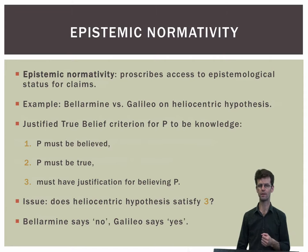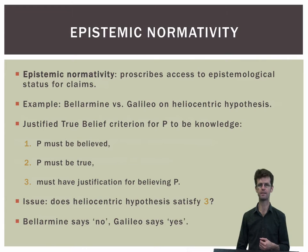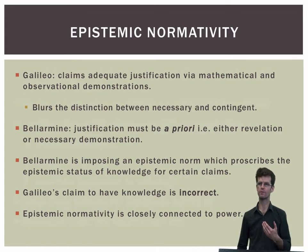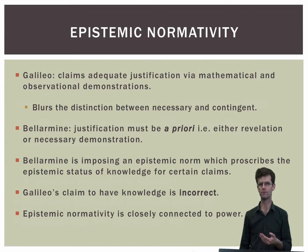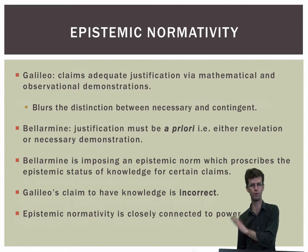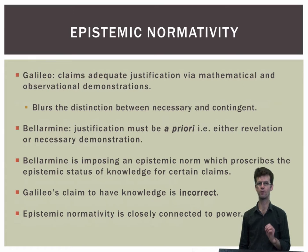With regard to the first requirement, the theory was believed at least by its supporters. With regard to the second, matters were still to be settled, but they would have been a lot closer to being settled if it could be shown that the third requirement was satisfied — that there was adequate justification for believing the heliocentric system to be true. The debate between Bellarmine and Galileo was therefore over the third requirement. According to Galileo, there was adequate justification for believing that Copernican heliocentrism was true. However, Galileo did not clearly distinguish the various grounds for thinking the heliocentric hypothesis was true. His telescopic observations were contingent, and only the mathematical proofs he appealed to were necessary.